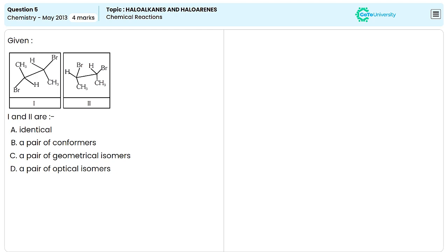Two organic compounds are given here and they are denoted as 1 and 2. We need to identify what type of compounds are 1 and 2. Both of these compounds have the same molecular formula because this contains two carbon atoms and each carbon atom is containing one methyl group, one bromine atom, and one hydrogen atom. Same case we could see in case of the second molecule also.